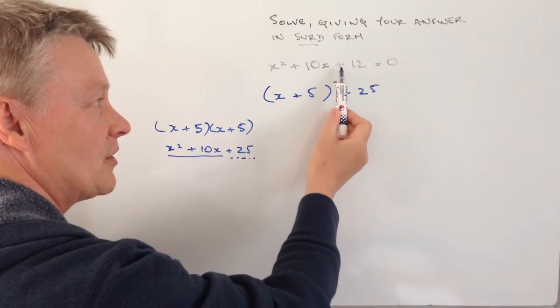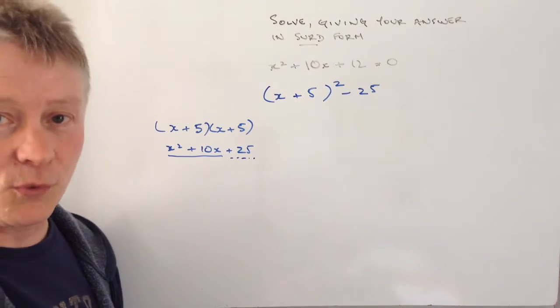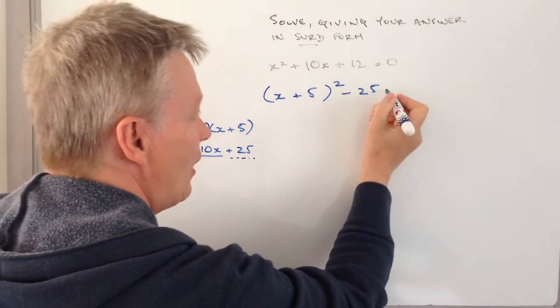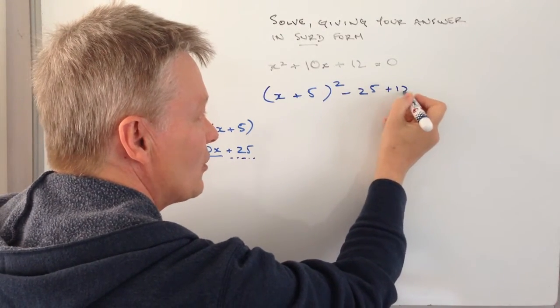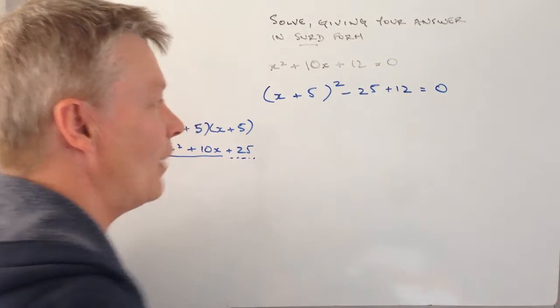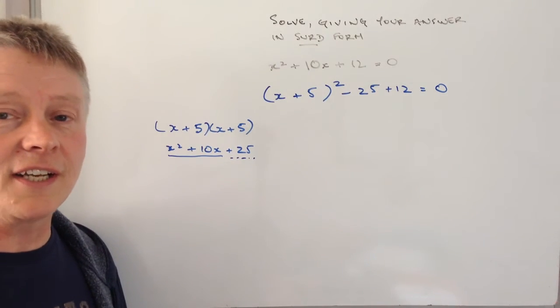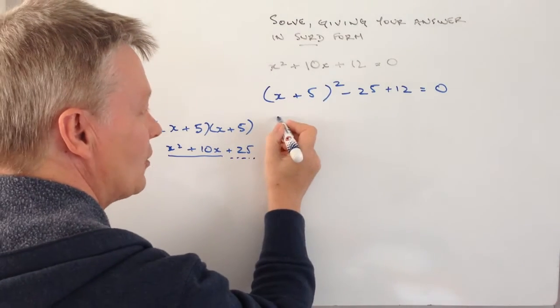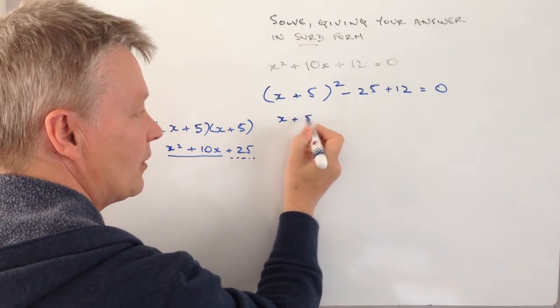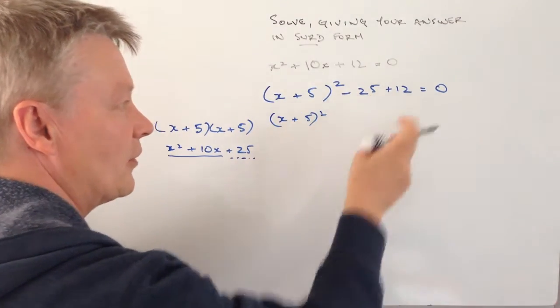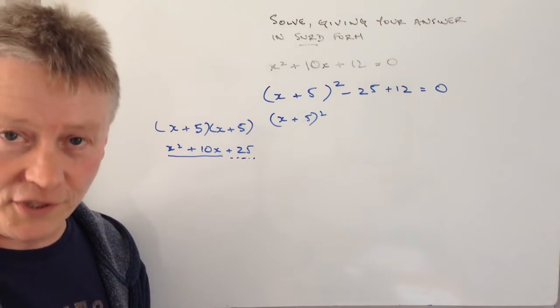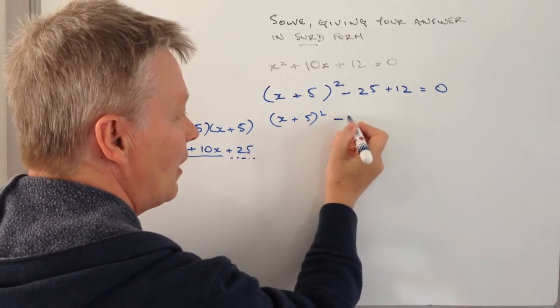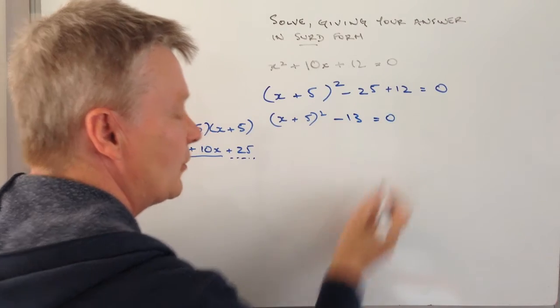The only other thing I've got to do is take into account this plus 12. So I'm going to plus 12 onto here and make that equal to 0. Then it's just a case of tidying this up. I've got x plus 5 squared, and minus 25 plus 12, that's minus 13, equals 0.